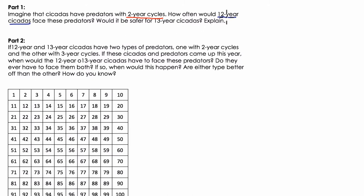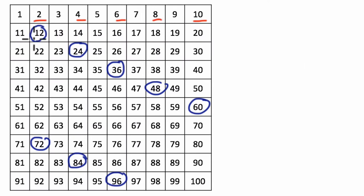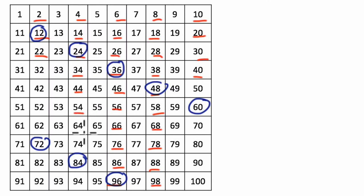In other words, do 12-year cycles and 2-year cycles meet up all the time? Sometimes? Never? I made this little grid so we can look at a century. If I circle every 12 years, these would be the years that these cicadas are emerging. The multiples of 2 show that every 2 years the predators are coming out of the ground. Counting up by 2s, we quickly notice that the predators are always there to meet the cicadas — 2 goes into every multiple of 12.